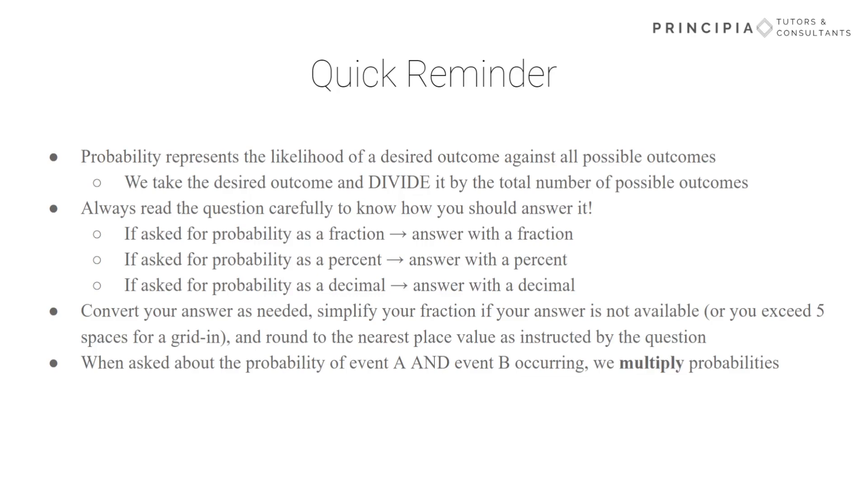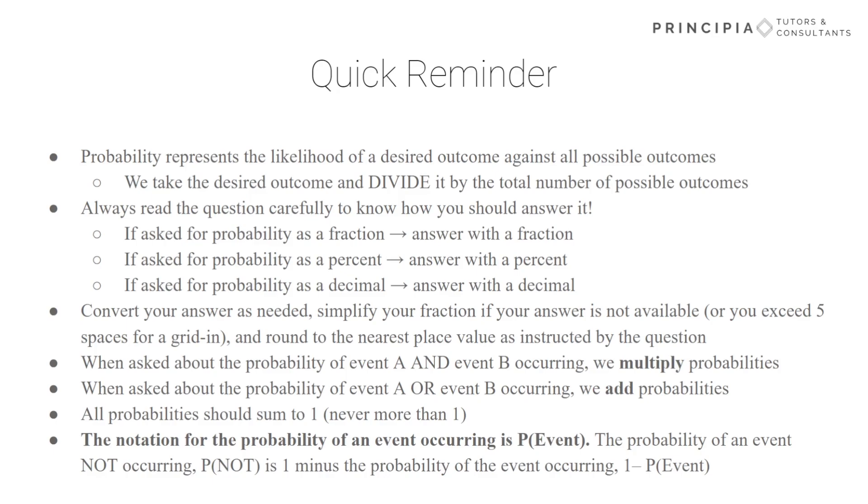All right, so when we see the word 'and' between two probabilities, that means we need to multiply them. So if I want to know the probability of A and B occurring, it's probability A times probability B. If we see 'or' between probabilities, we need to add them. So the probability of A or probability B occurring, we just add probability A and probability B. All your probabilities will sum to one. The notation we'll use for probability of an event occurring would be P(event) or P(outcome). The probability of something not occurring, denoted by P naught, is just one minus the probability of that event occurring.